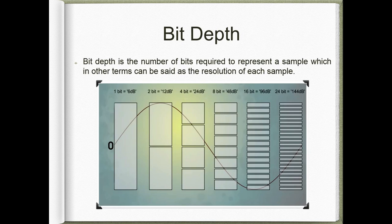Bit depth is the number of bits required to represent a sample, which in other terms can be said as the resolution of each sample. From the diagram, we can see a different number of bits which can be used to represent the amplitude of a signal. We define this selection as the signal's bit depth.